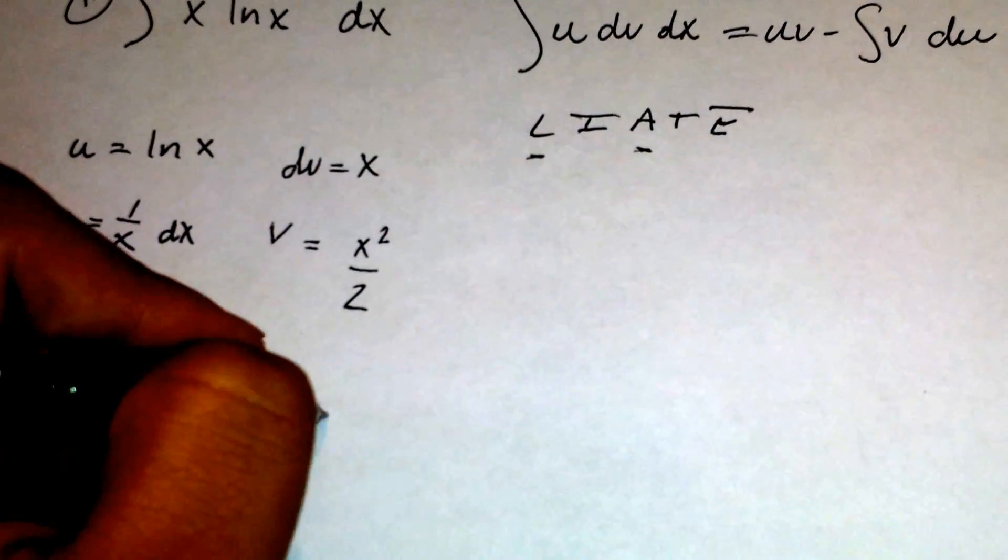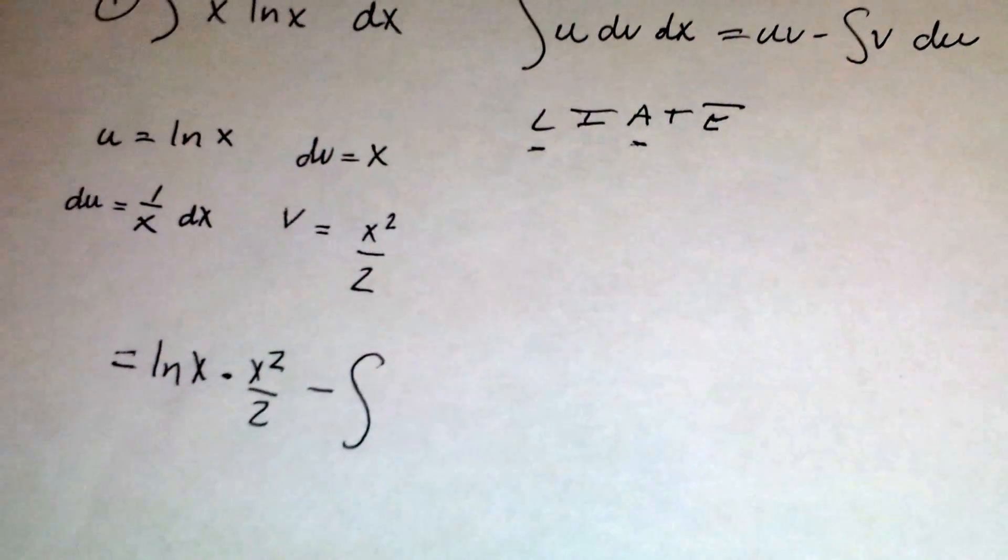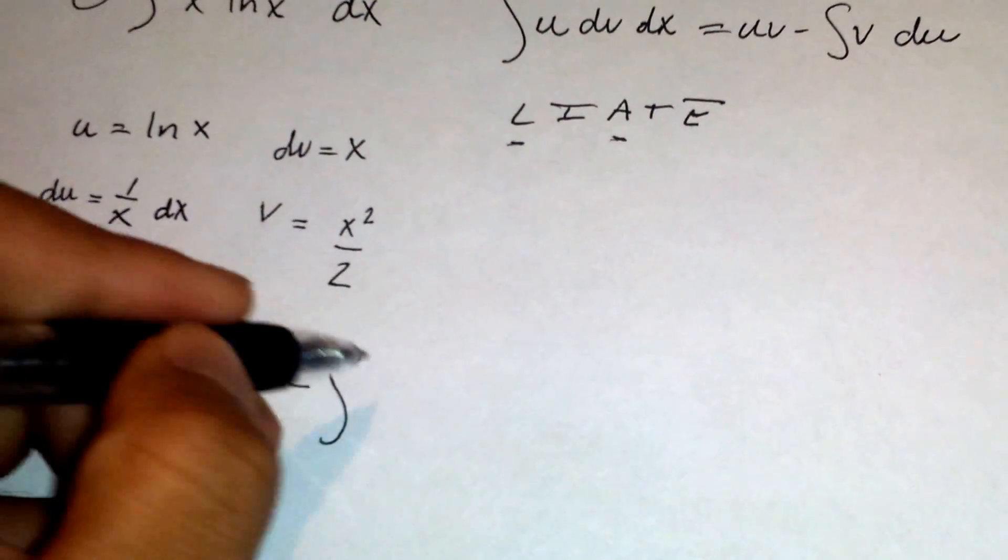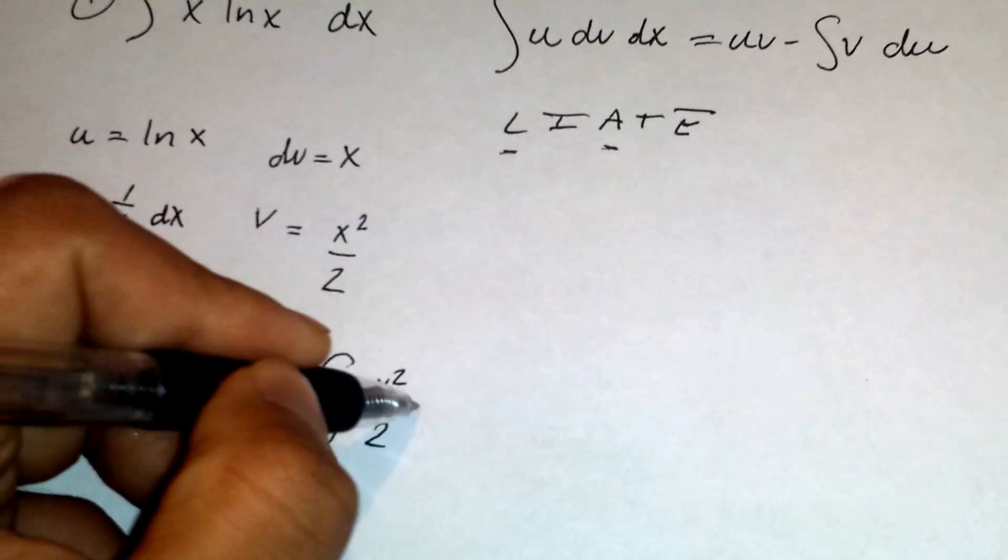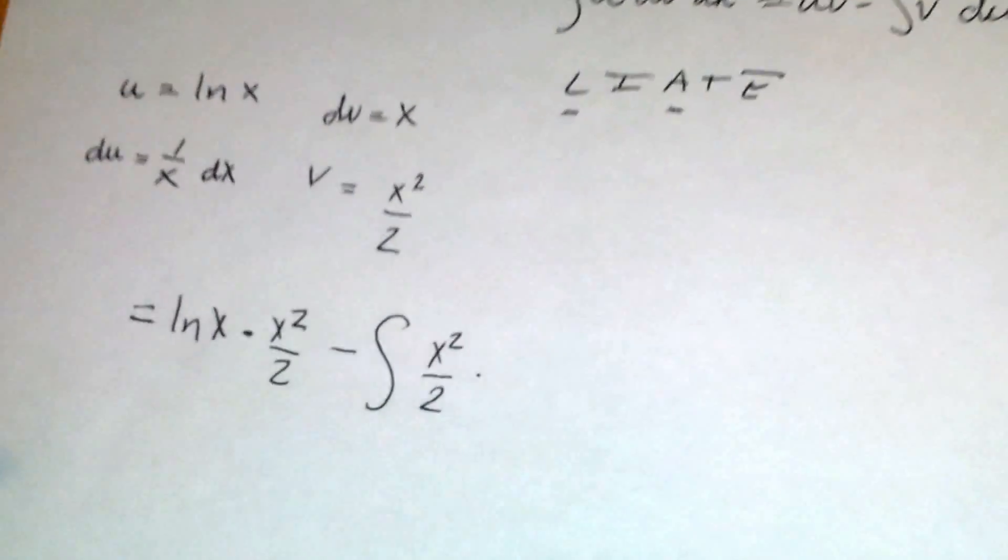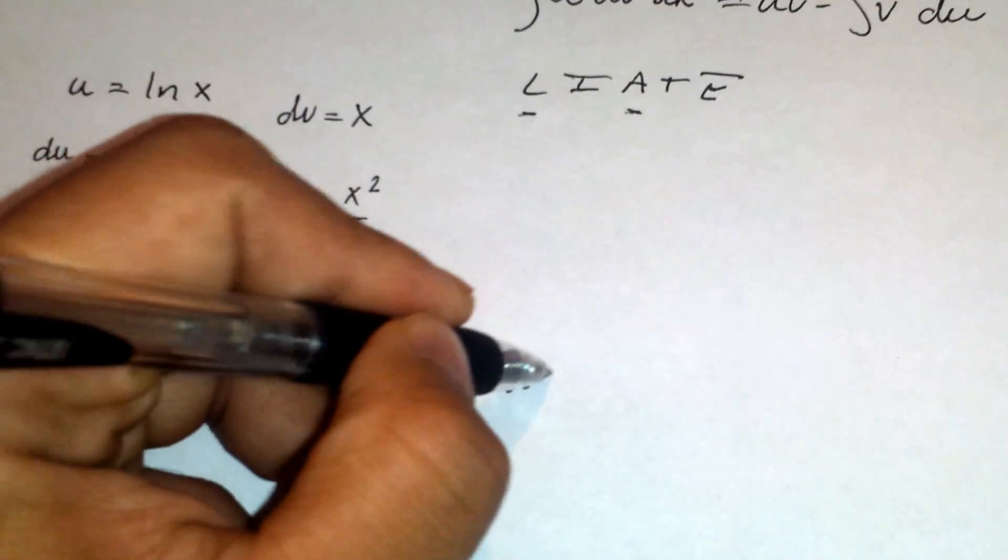minus the integral of v times du, which is x squared over 2 times 1 over x dx.